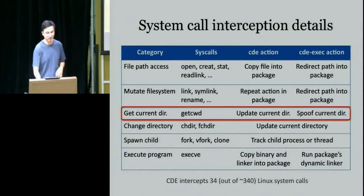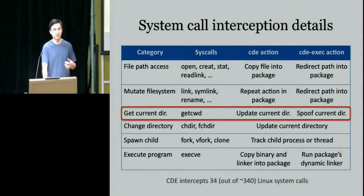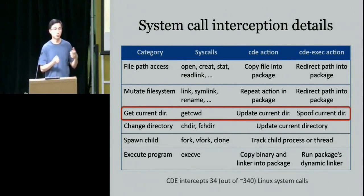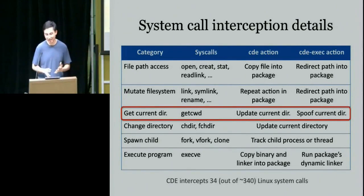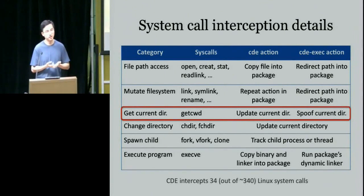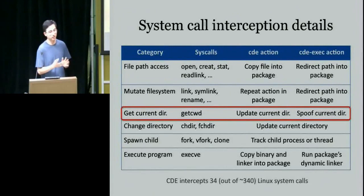When a program requests the current directory, CDE updates its record of the monitor process's current directory. System calls might access files through relative paths, so you need to join a relative path with the current directory to get the real path. CDE-exec actually spoofs the current directory, returning a fake current directory that fools the program into thinking it's still on the original machine — because some programs are really sensitive to hard-coded current directories and things will just break otherwise.